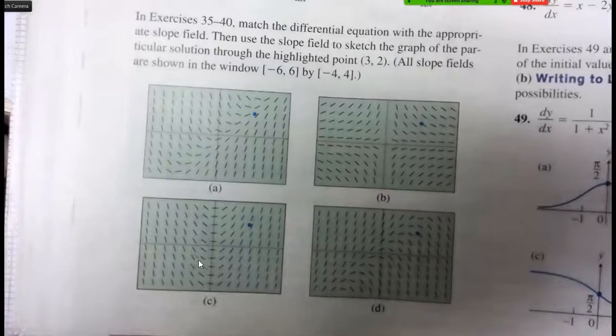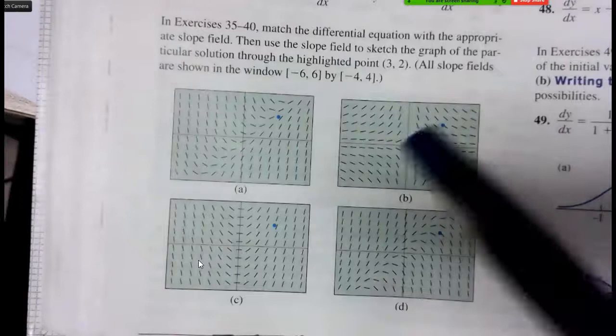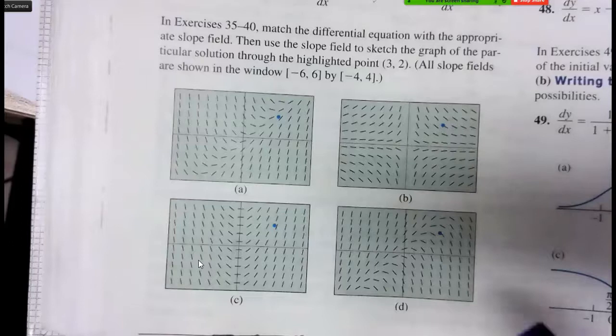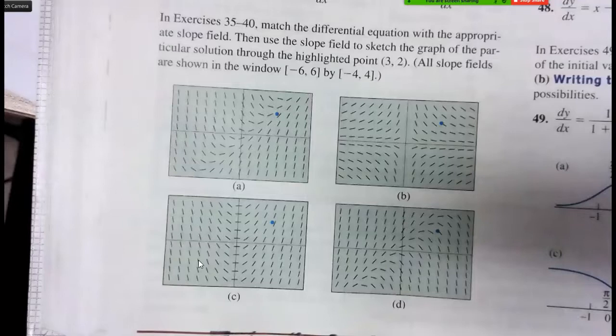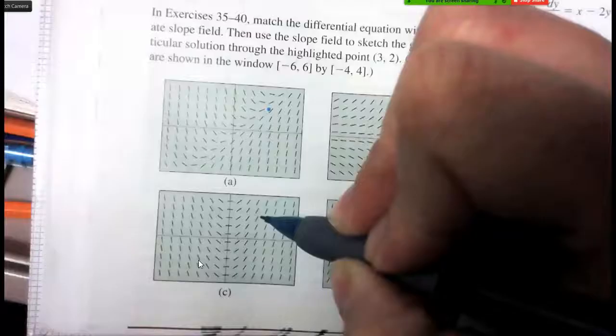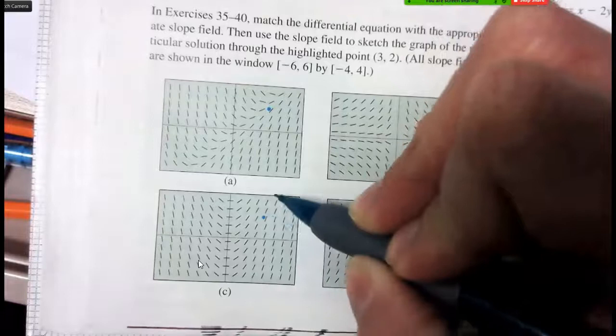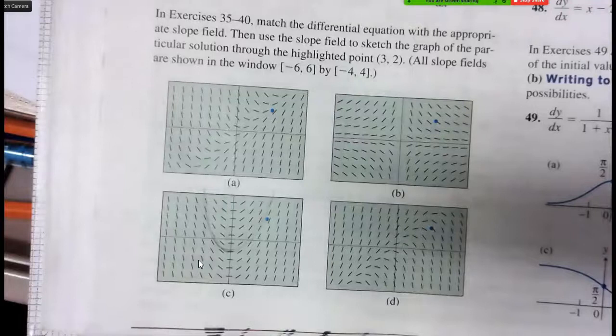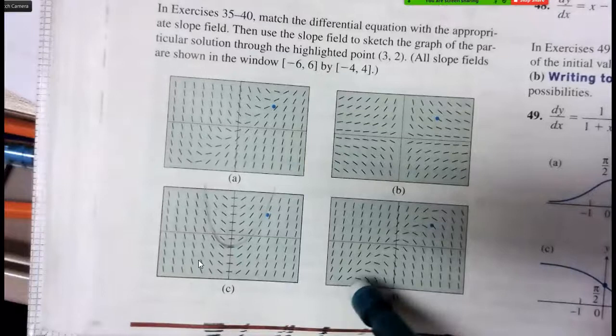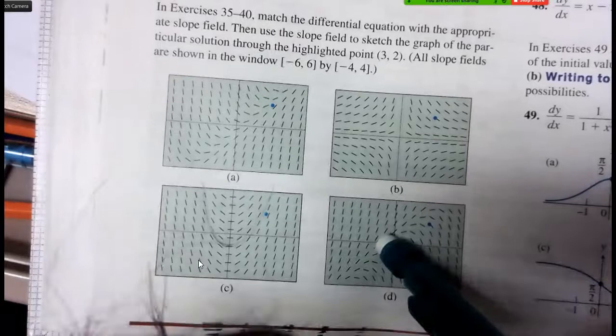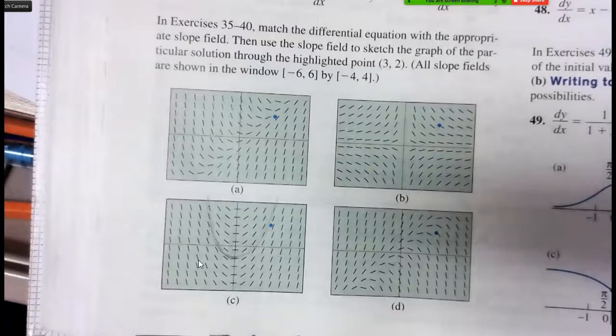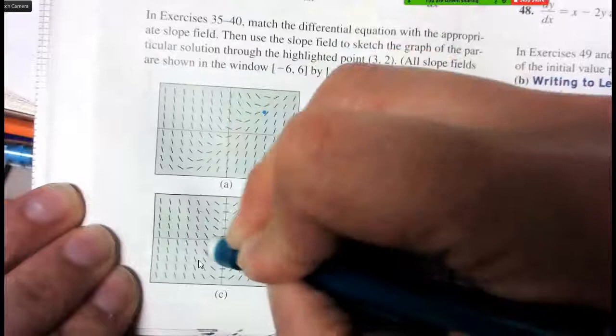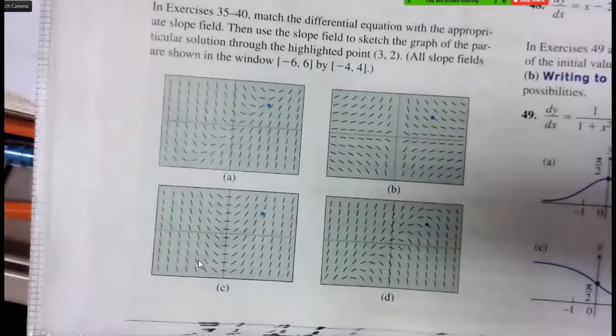Alright, so if you're looking at the slope field questions, it says to match them with their equations. To match these slope fields with their equations, like letter c for example, that one's really easy for me to see what slope field that goes to. If you pick a point and just sort of follow along with that, you can see that letter c is a quadratic. So the derivative of a quadratic is going to be linear. So when you match it in 35, you're looking for a linear, which means that 35 would match to letter c.